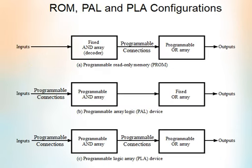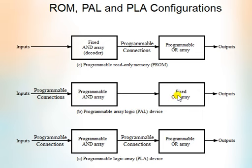Let's recap. There are three types of programmable logic devices: ROM, PAL, and PLA. In ROM, we have a fixed AND array and a programmable OR array. In PAL, we have a programmable AND array and a fixed OR array. Whereas in PLA, we have both a programmable AND array and a programmable OR array. Hope you understand the main differences between the logic devices like ROM, PAL, and PLA. Thank you.